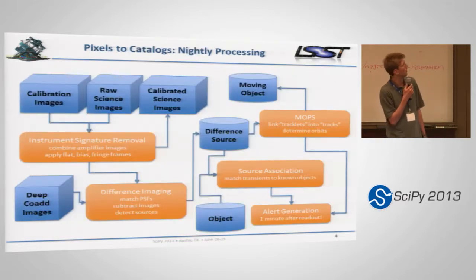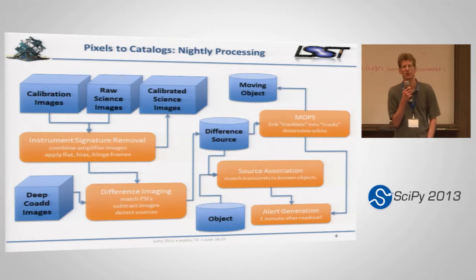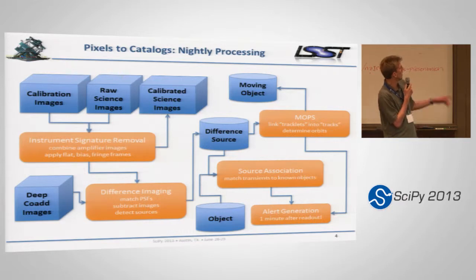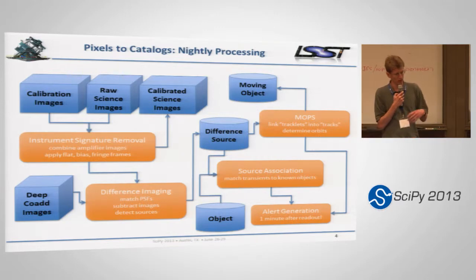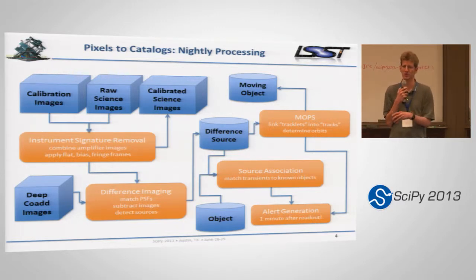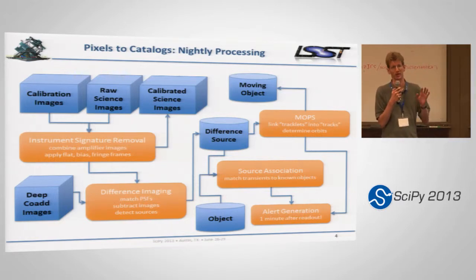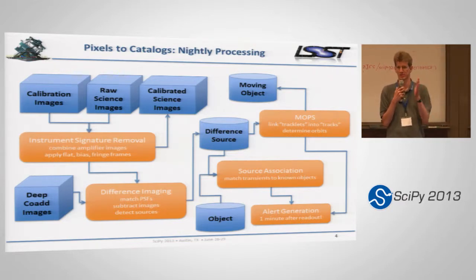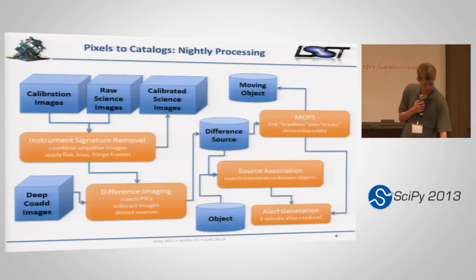So what are we doing? I'll go through these flow charts quickly to give you an overall idea of what we're trying to accomplish. Every night we need to take the raw images, calibration images, and calibrate them. We need to do difference imaging to look for transients and moving objects, try to associate those moving objects and transients with other things we've detected, try to find asteroids and generate alerts — all very quickly. We're taking new images every 30 seconds and we essentially need to get the alerts out at the same rate.